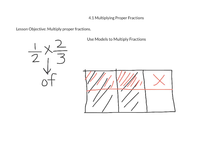What we are going to look at now is where the two fractions overlap in our model — where we shaded in both red and black. Two of our pieces are shaded in both red and black, so that is going to become our numerator. If we look at how many pieces are in one whole, we created six. So six is going to become our denominator. When we multiply one half times two thirds, we get an answer of two sixths.